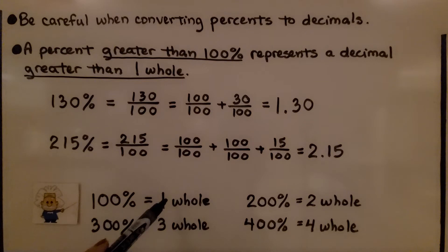So remember, 100% is 1 whole, 200% is 2 whole, 300% is 3 whole, 400% is 4 whole, and so on.